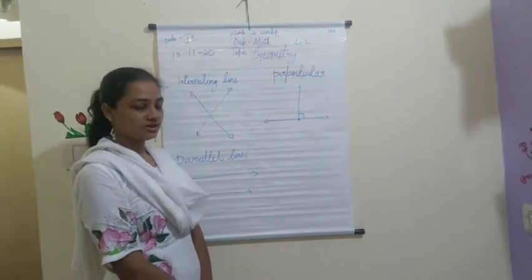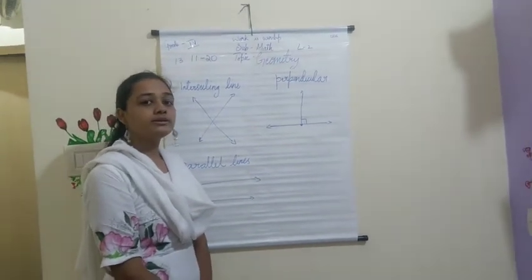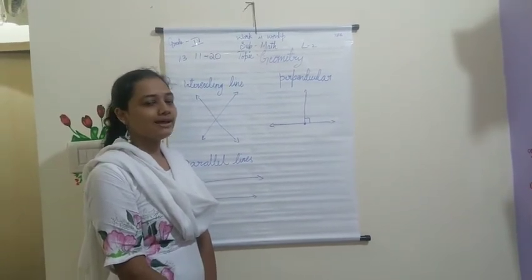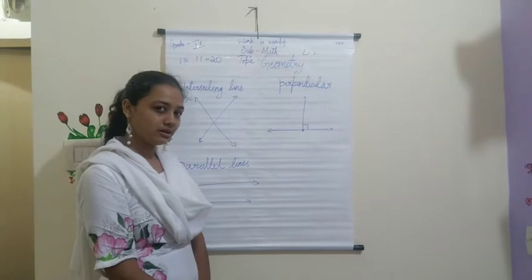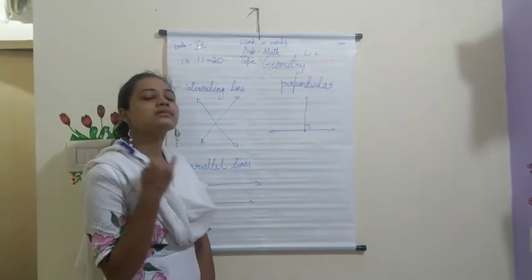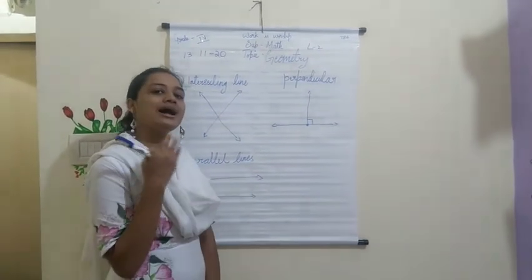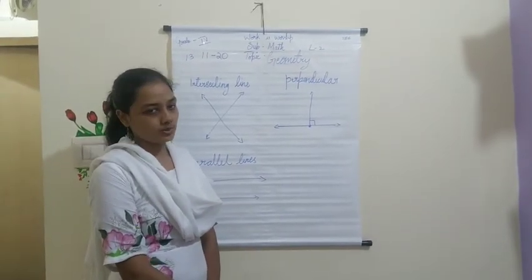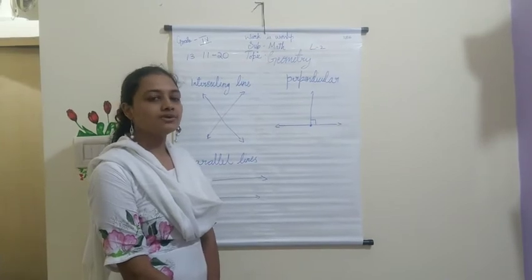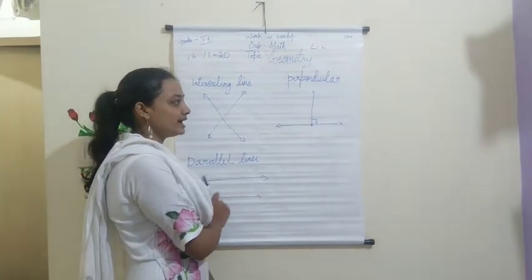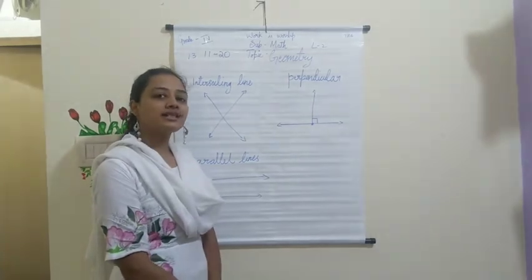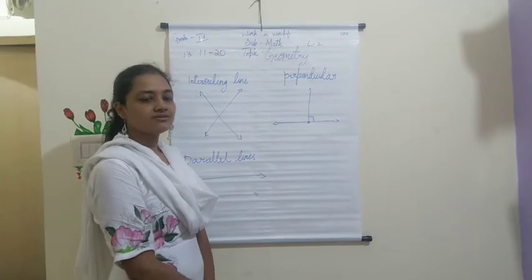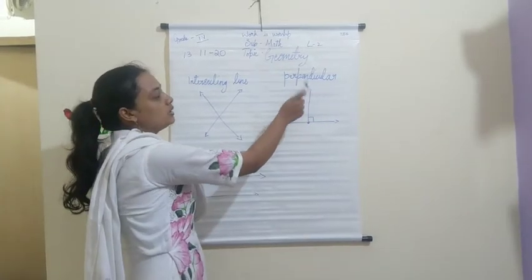In the previous class or previous video, you learned different types of lines, and every line starts from a point. The types of lines you learned were: line, line segment, and ray. You also saw the differences between them. A line has arrow marks on both sides, a line segment has no arrow marks, and a ray has an arrow mark only on one side.